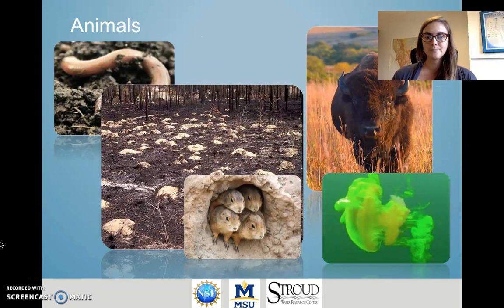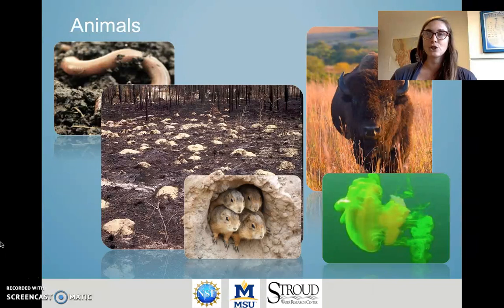A large number of ecosystem engineers exist. Classic examples include earthworms that cycle soil material and alter nutrient states and moisture; rodents that create burrows, making the soil more porous and changing soil moisture conditions; bison traveling in large herds that can trample sediment and alter ground conditions; and jellyfish aggregations that create currents around their bodies, altering ocean water mixing similarly to wind and tide forcing. This picture is taken from a lab experiment where researchers used green dye to illustrate how current patterns change around jellyfish bodies.